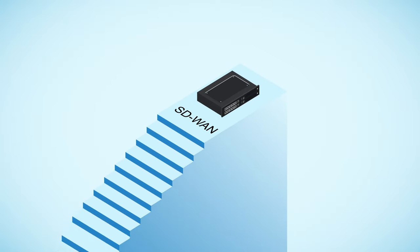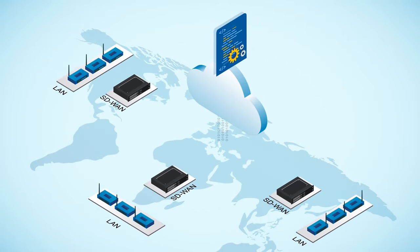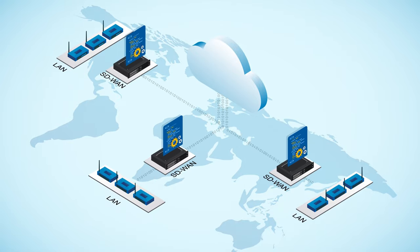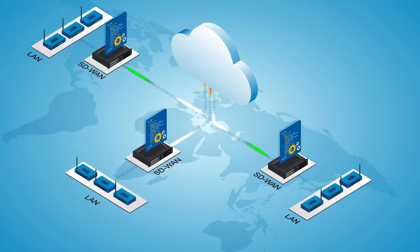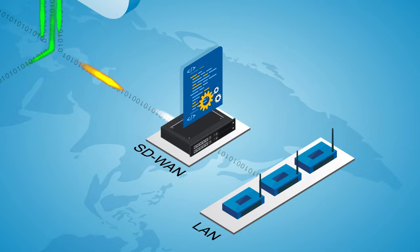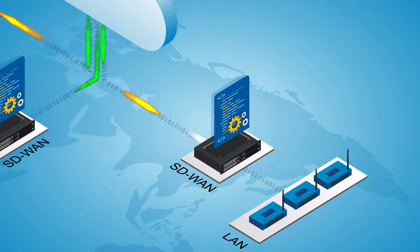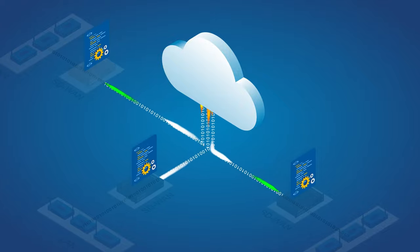SD-WAN is frequently described as the latest evolution of wide area networking infrastructure, but it's really a peer-to-peer software application that runs in the footprint of WAN edge routers and implements a virtual WAN over physical internet and/or private IP network transports. From the outside, it looks and behaves exactly like a traditional IP WAN with the SD-WAN peers emulating routers, but on the inside, between the peers, there's a lot more going on. SD-WAN peers exchange more information than just data packets.